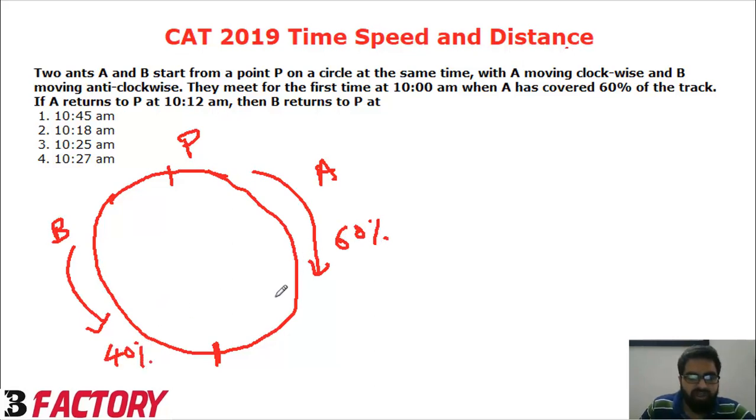One thing we can say from here is speed of A to speed of B is 3 by 2. Whatever time A has taken, B will take exactly 1.5 times.